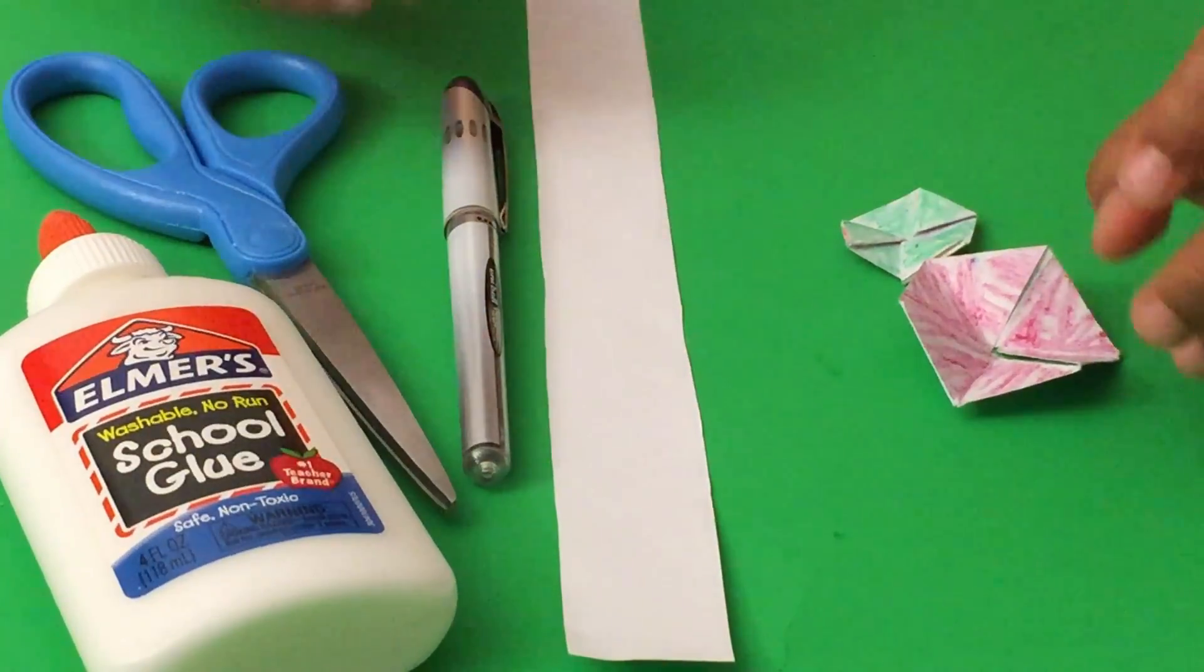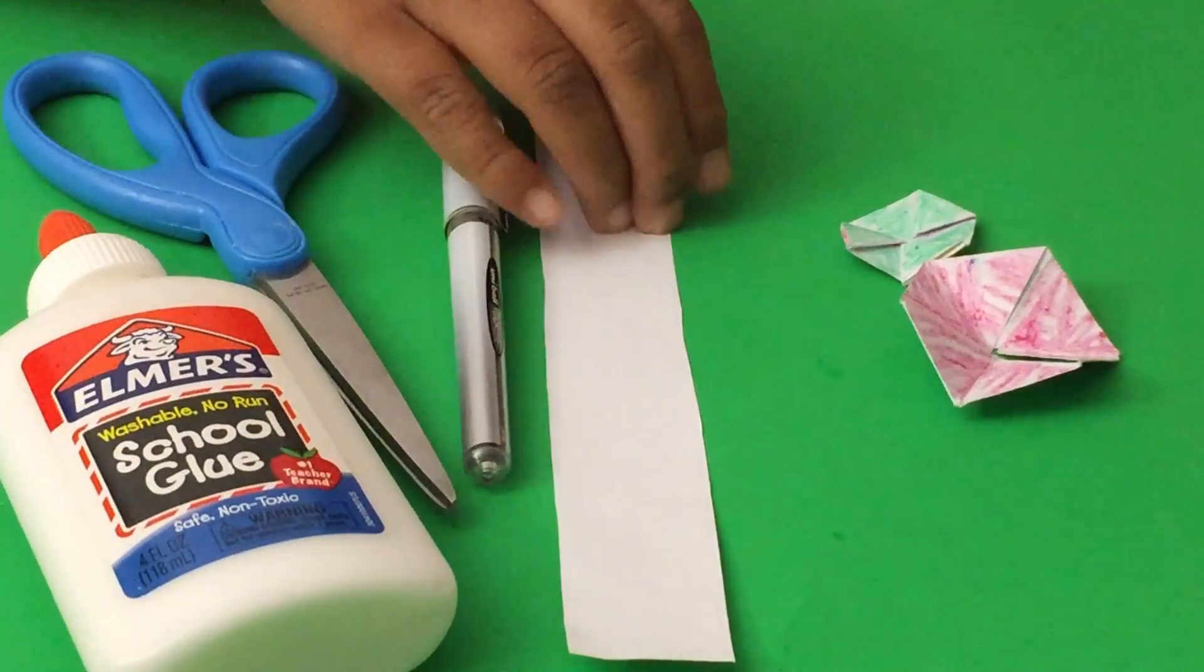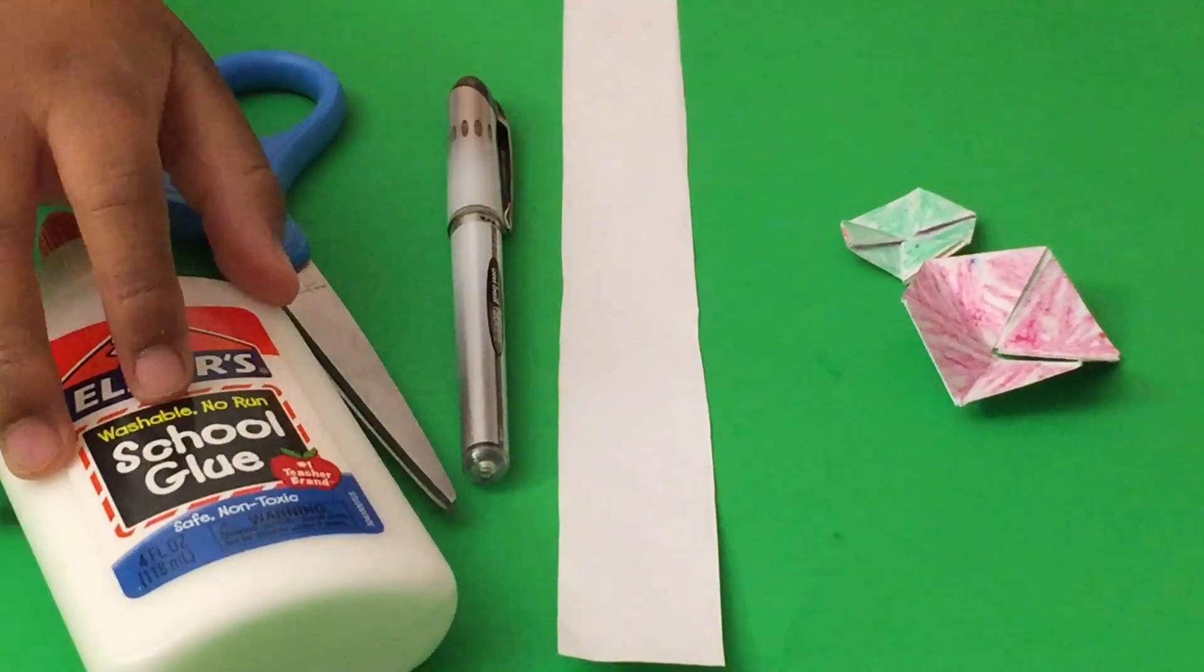To make a trihexaflexagon we need a paper strip, a pen, scissors and glue.